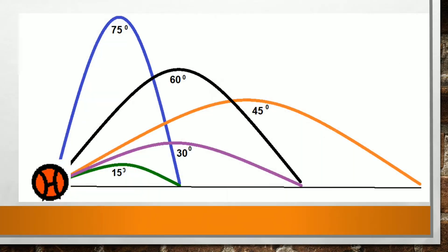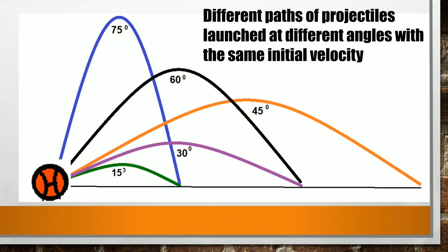This figure shows the paths of projectiles launched at different angles with the same initial velocity. It neglects the effects of air resistance.